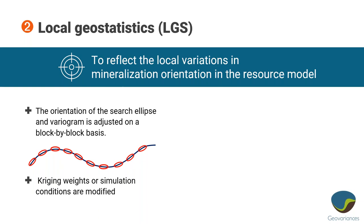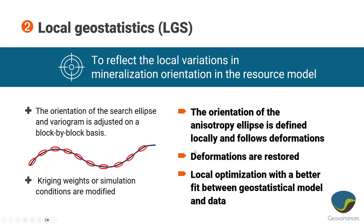For local anisotropies, at different parts of the domain we reorient the search ellipsoid, and if we do that in such a way that it follows the correct orientations, that should do a good job of ensuring estimates at each location roughly follow the direction of continuity. The kriging weights or simulation conditions will be modified accordingly. We only work with the original grid in world space — we're not deforming it and creating a new grid as we would with unfolding — but we hope that by changing the orientations of the ellipsoids we can better match the real world behavior.